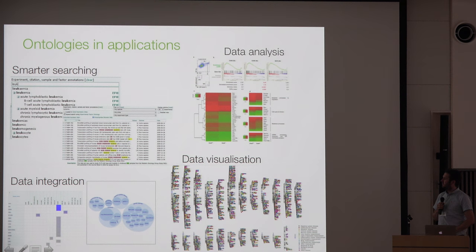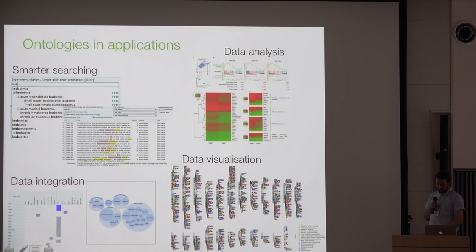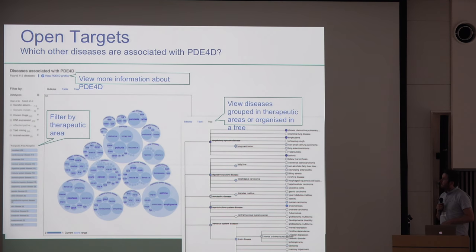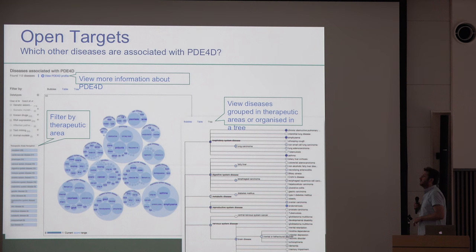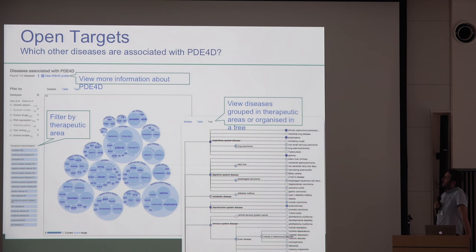We've got some nice examples of visualization driven from the ontology. We automatically generate a view of all the traits for the GWAS catalog, which is ontology-driven and lets you filter down to traits based on the ontology annotation. You can also explore the new Open Targets system, which looks at associations between genes, diseases, and drugs — all the data is marked up with ontology, enabling rich visualizations and clustering exploiting the ontologies.